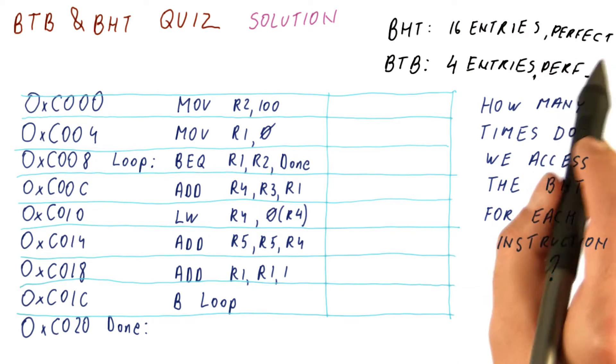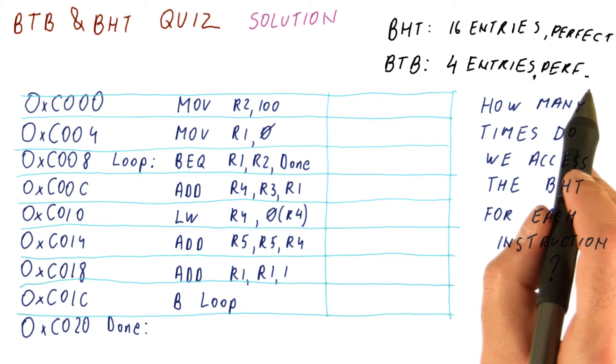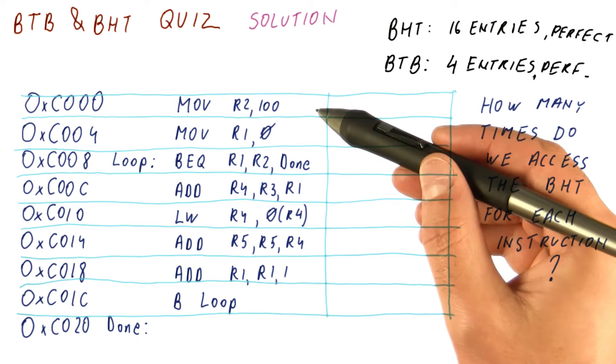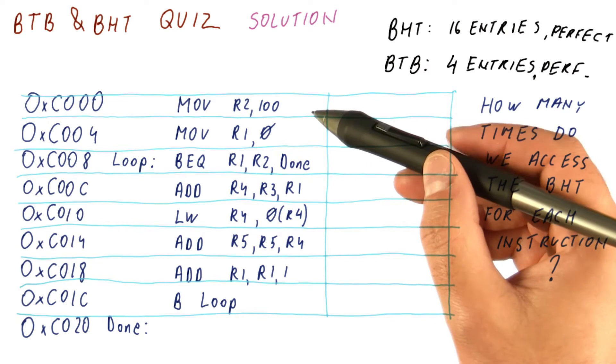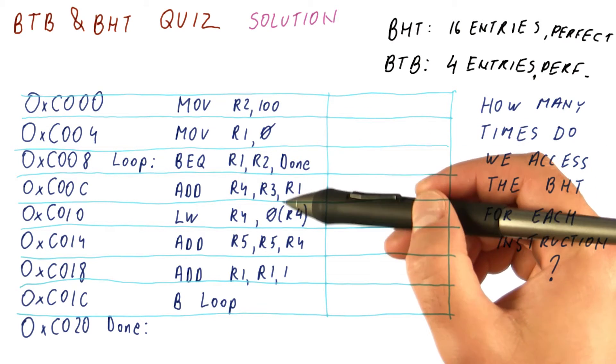And because we have perfect prediction for both BHT and the BTB, that means that we will never fetch any instruction that actually is not supposed to execute. So we now just need to figure out how many times each of these instructions executes.